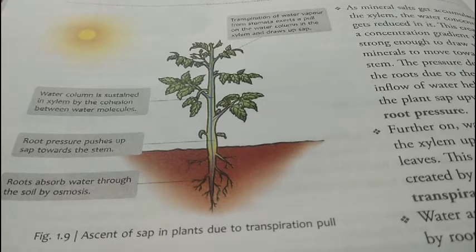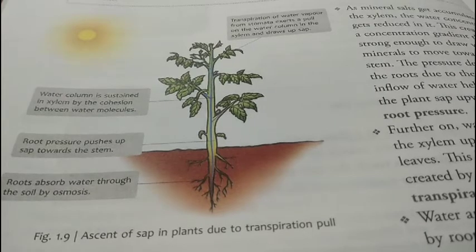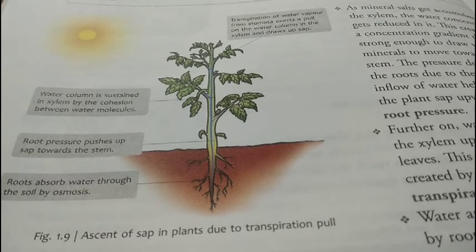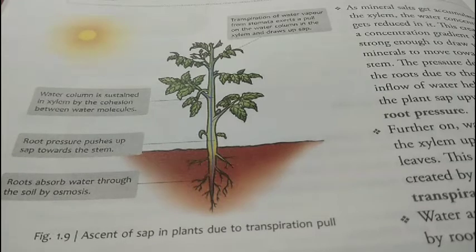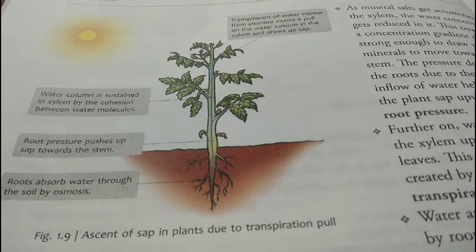The excess water lost through the aerial parts of the plant body — this process is transpiration. Plant जितना पानी absorb करता है उसका 1% ही photosynthesis में use होता है, बाकी water vapor के रूप में aerial parts से evaporate होता है। Transpiration के वजह से water loss होने पर plant body में एक suction force create होती है जो नीचे से पानी को खींचती है — इस process को transpirational pull कहते हैं।